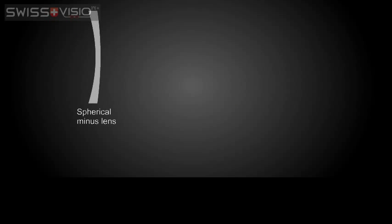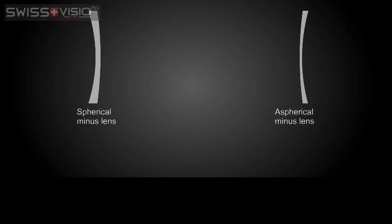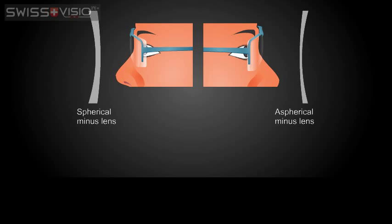Traditional spherical minus lenses have increasingly thicker edges as the prescription increases. Choosing an aspherical lens will reduce the thickness of the edges, making the lens look nicer in the glasses. Thinner lenses are more elegant and are perceived as an expensive upgrade.